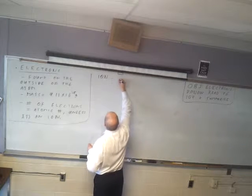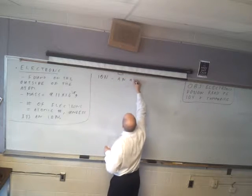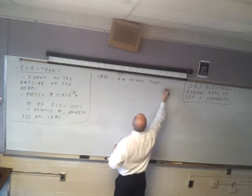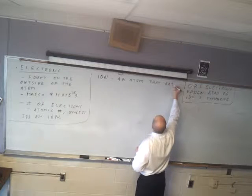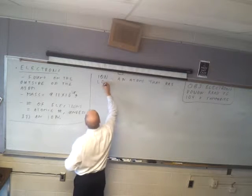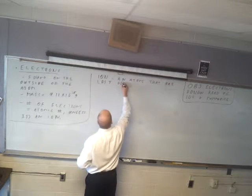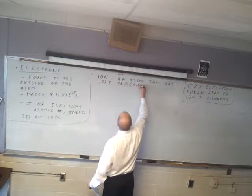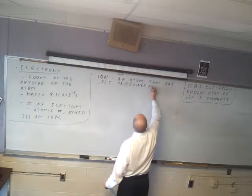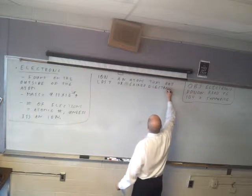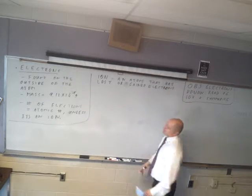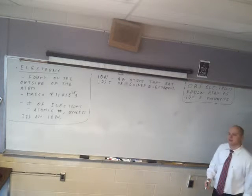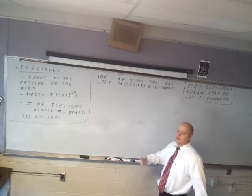An ion is an atom that has lost or gained electrons. In other words, if the number of electrons is not the atomic number, then it's an ion. If it is the atomic number, then it's an atom. Ions are charged; atoms are neutral.